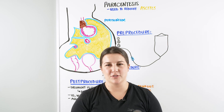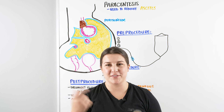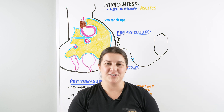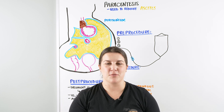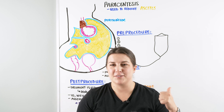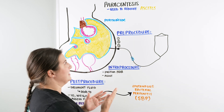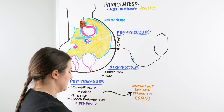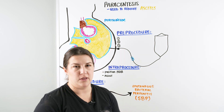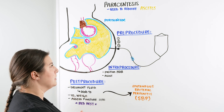Hi, Ninja Nerds. In this video, we're going to talk about paracentesis. Check out ninjaner.org where you can get all the notes and illustrations for these lectures. A paracentesis is a procedure that we use to remove ascites within the peritoneum.